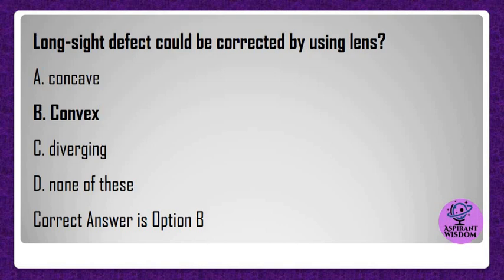Long sight defect could be corrected by using which lens? A) Concave, B) Convex, C) Diverging, D) None of these. Correct answer is option B.